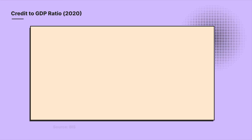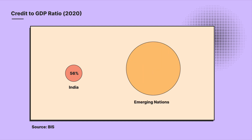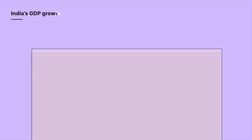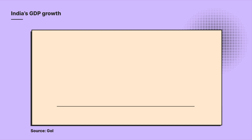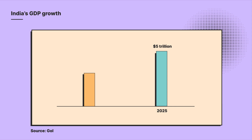Sample these numbers. Our credit-to-GDP ratio, a number that measures the participation of the banking sector in the retail economy, was 56% in 2020. Compare this to other emerging economies where the ratio stands at 135%. And India's own big target is to become a USD $5 trillion economy by 2025. We hit the USD $3 trillion mark in 2021 — that's another $2 trillion of growth we are aiming for.